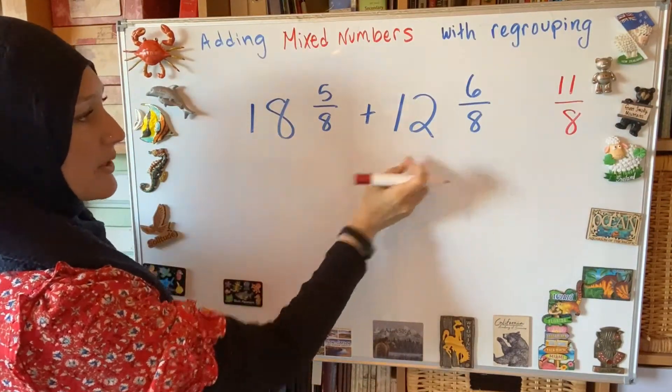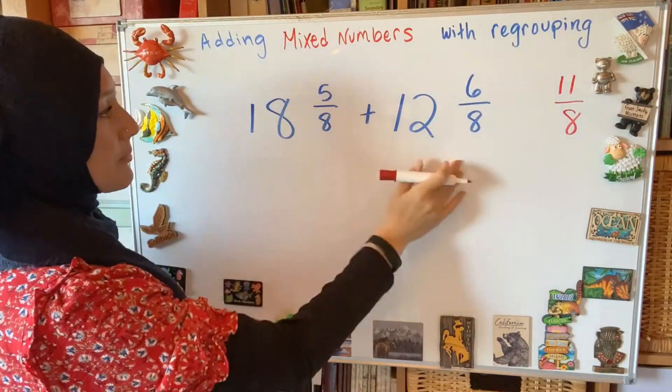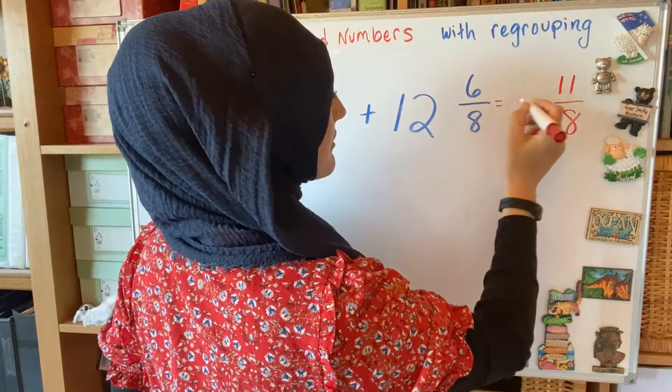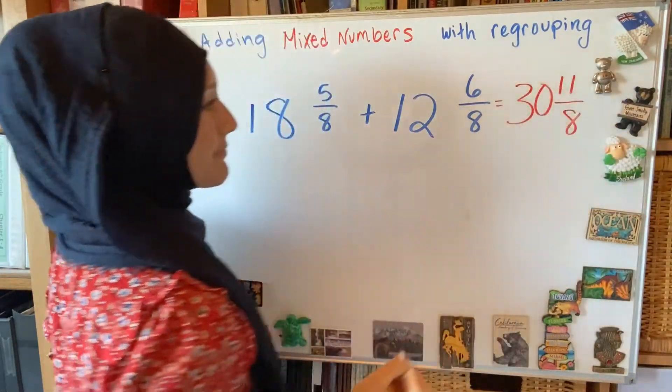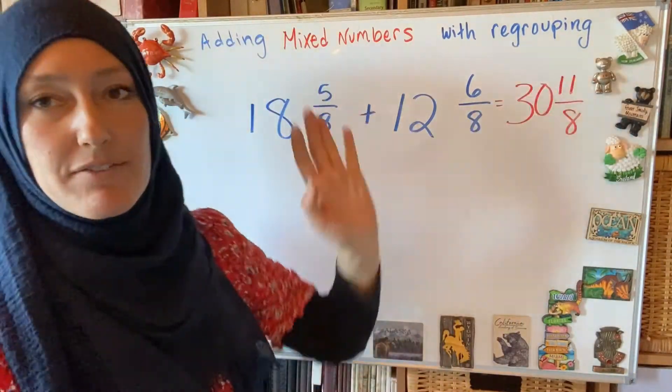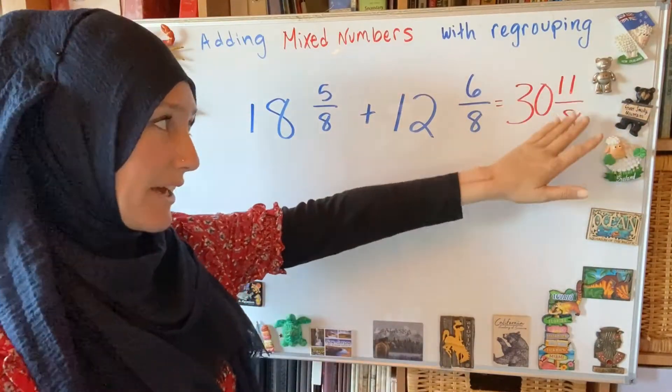And then my whole numbers, 12 and 18, will be 30. So now I look over here. I have an improper fraction. I can't leave it that way.